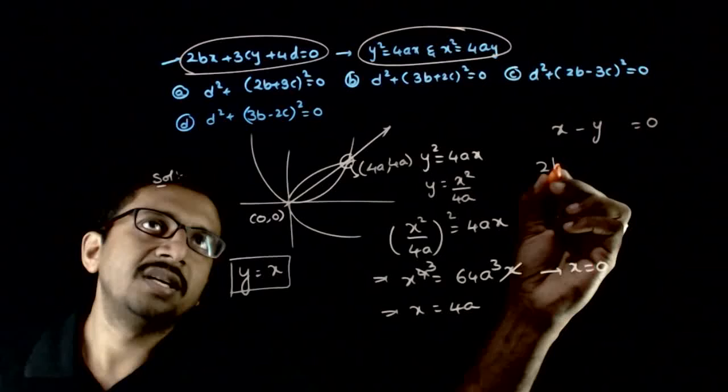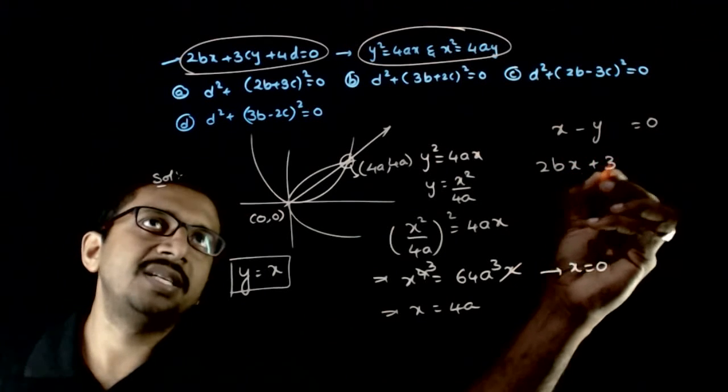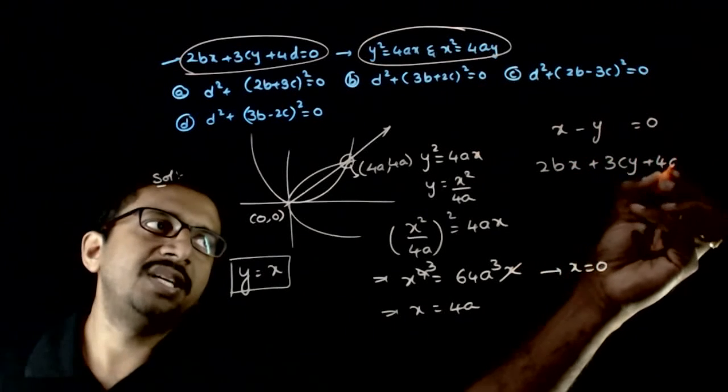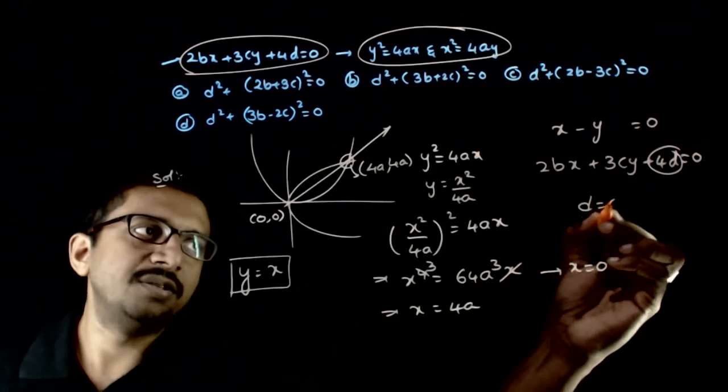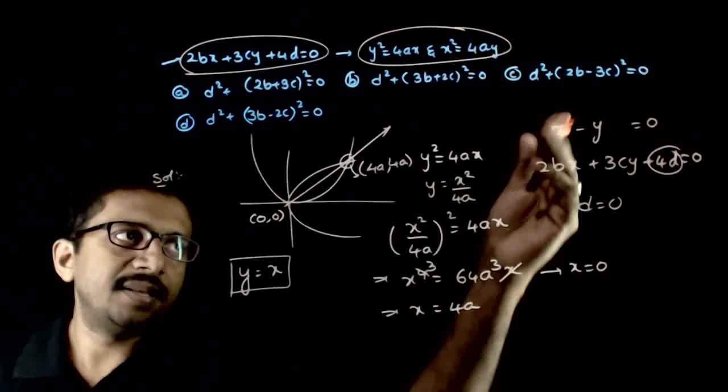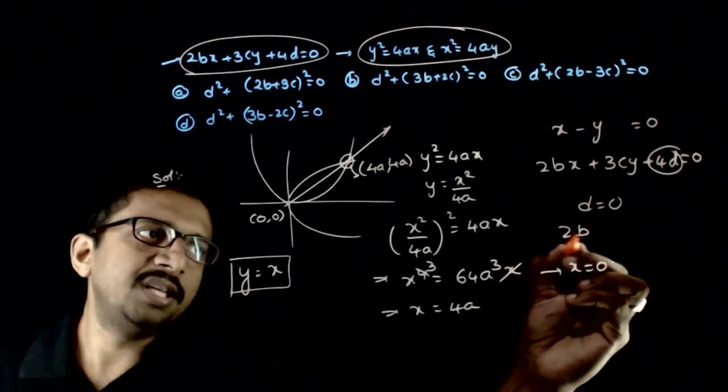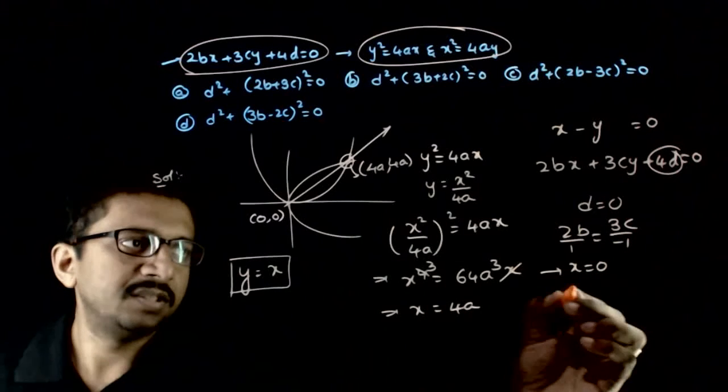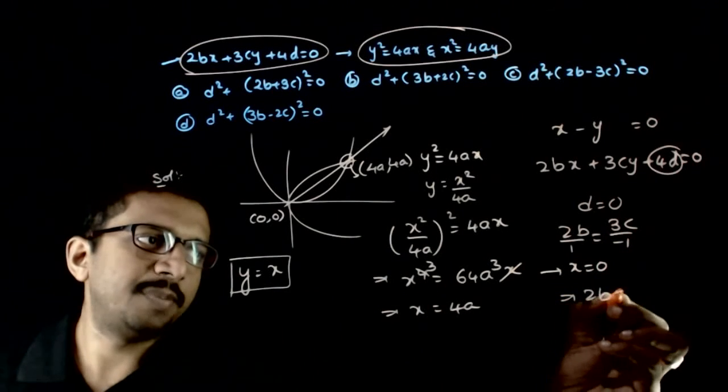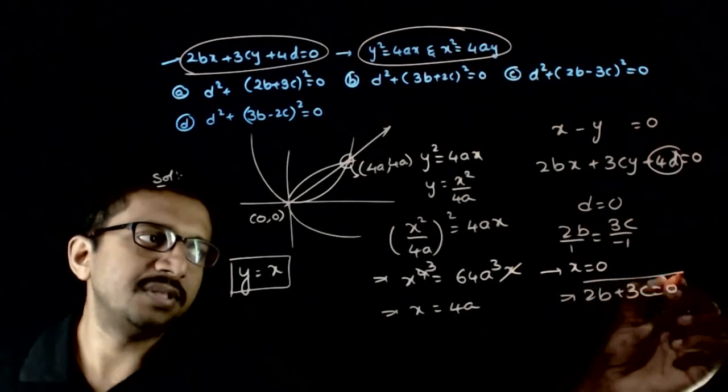The line that is given is 2bx plus 3cy plus 4d equals 0. So obviously, d has to be equal to 0 because there is no constant. And the second, so 2b by 1 equals 3c by minus 1.